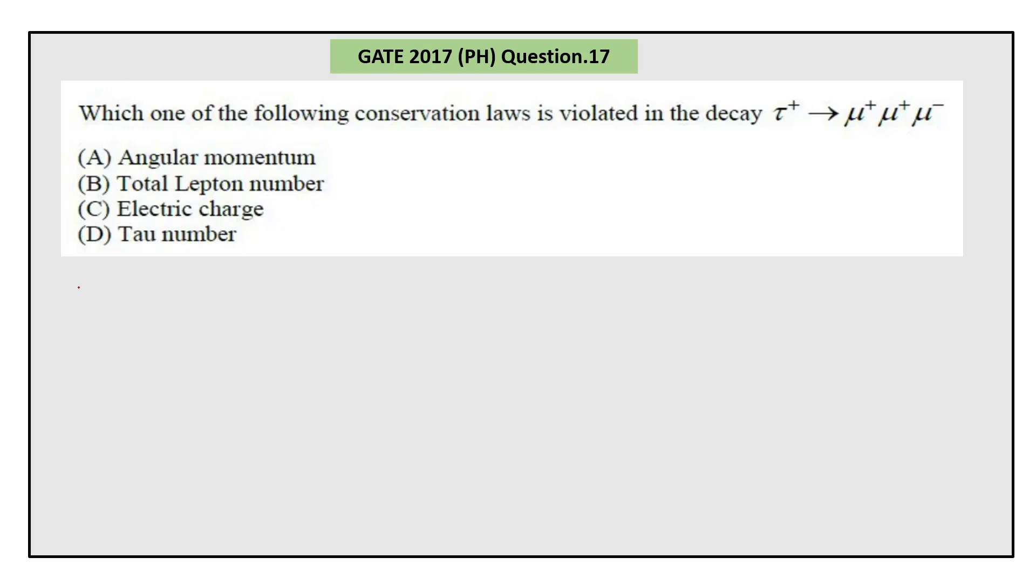Hello everyone, today I will be discussing GATE 2017 question number 17. The question asks: which one of the following conservation laws is violated in the decay of tau positive to muon positive, muon positive, and muon negative? The options are A) angular momentum, B) total lepton number, C) electric charge, or D) tau number.